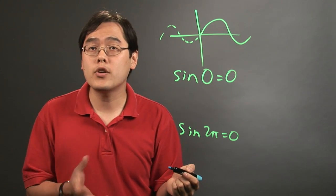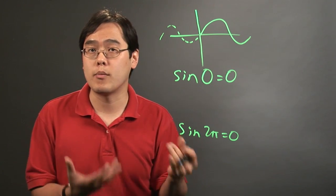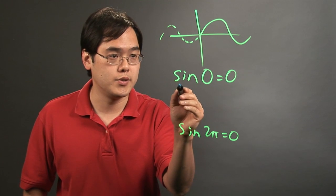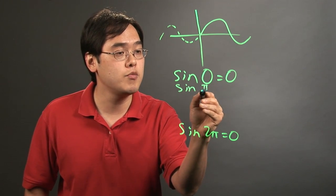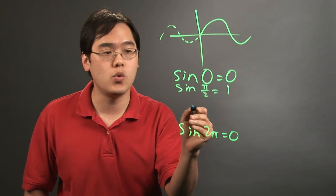For other common sine values to help you memorize the sine function, think about the pole angles. Sine of π/2, which is a pole, equals 1.